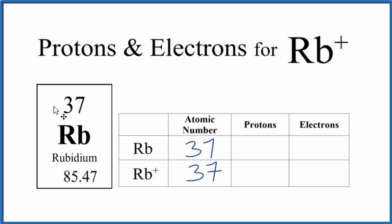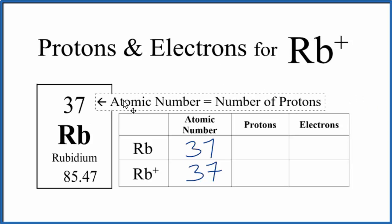If we look at the atomic number for rubidium, the atomic number equals the number of protons. So if we have 37 as our atomic number, that means we have 37 protons as well. And it doesn't really matter if we have an atom or an ion, we're always going to have 37 protons for rubidium.